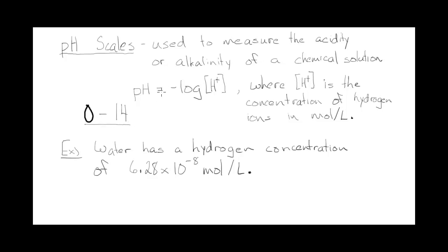The pH is equal to negative log of H plus. H plus is the concentration of hydrogen ions measured in moles per liter. When you measure the concentration of hydrogen ions and input that into this logarithmic equation, that's going to give you a number between 0 and 14.